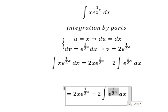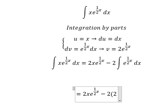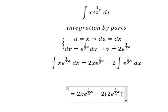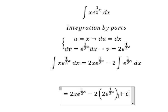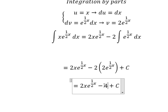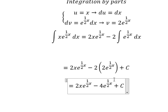The integration of this one gives us 2e to the power of one over two x, and I will add the constant C. So 2 multiplied by 2 gives us 4. This is the final answer. Thank you for watching.